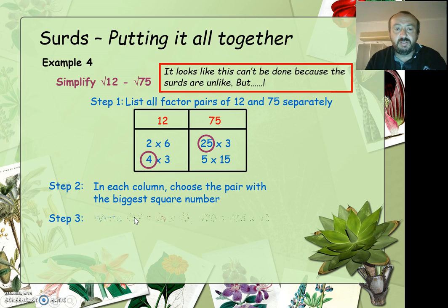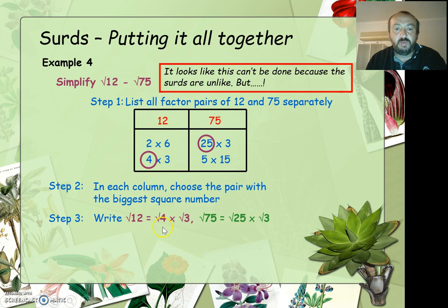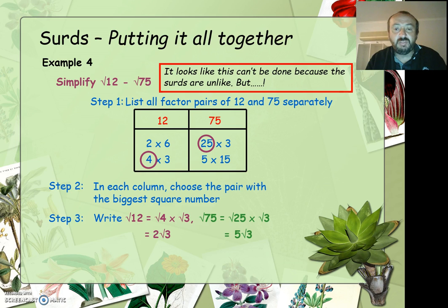Step 3 is to simplify these. Write root 12 as root 4 times root 3, and root 75 as root 25 times root 3. 12 is 4 times 3, and 25 times 3 is 75, so the root of 75 is the root of 25 times the root of 3. So root 12 can be written as 2 root 3, and root 75 can be written as 5 root 3.